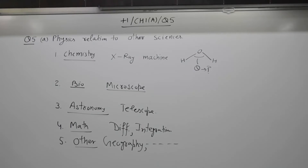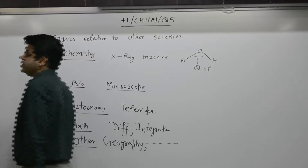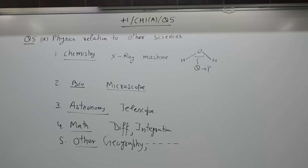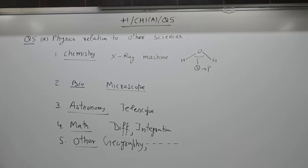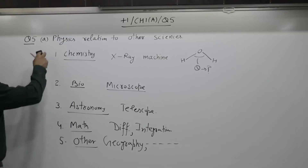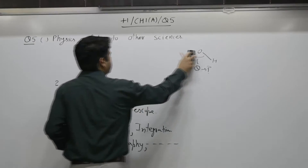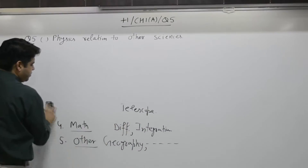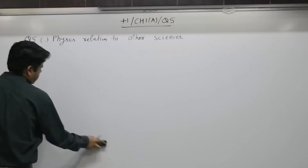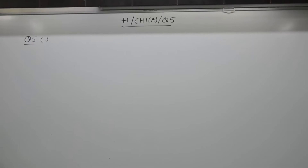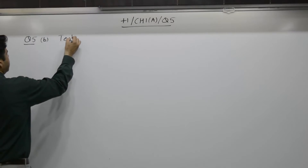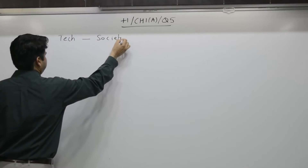Now go through the B part. If you have written the A part, the B part deals with how technology and society are related to each other — how technology has changed society. That is the relationship between technology and society.